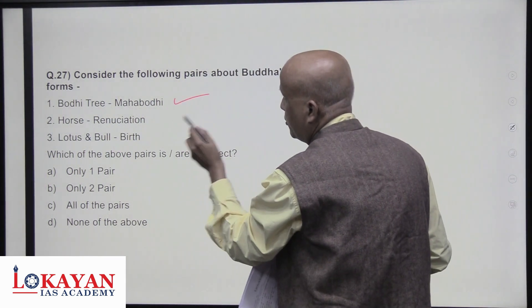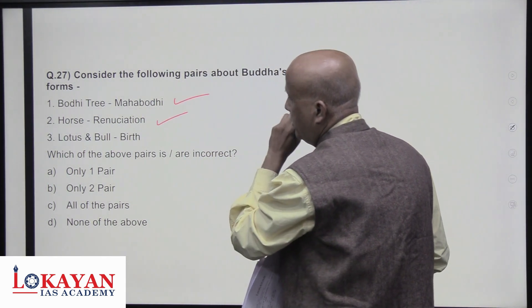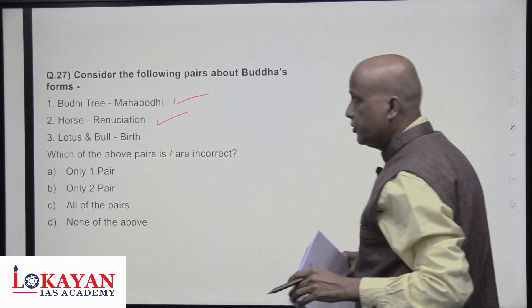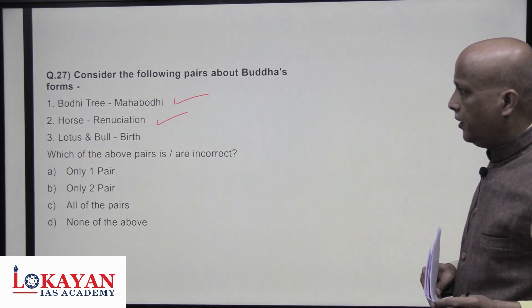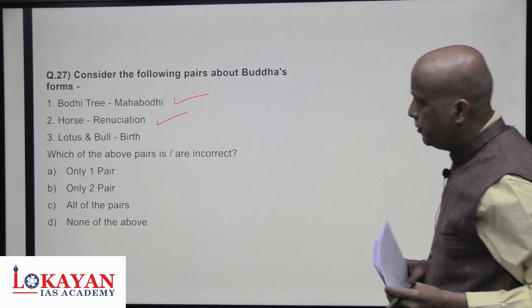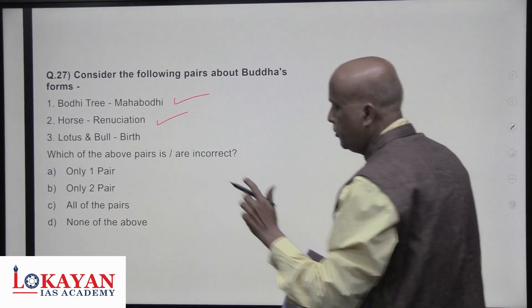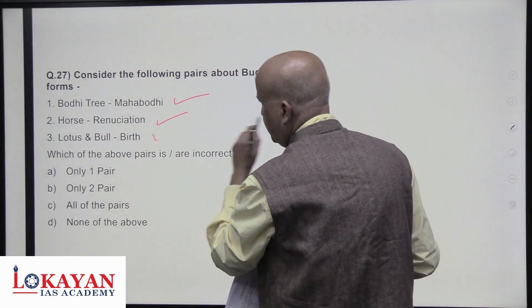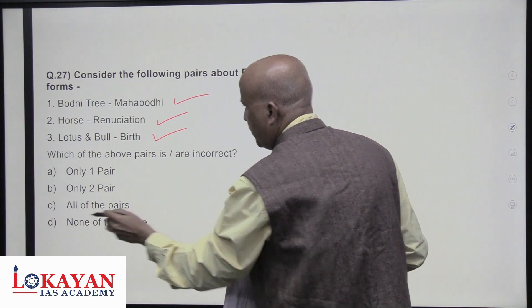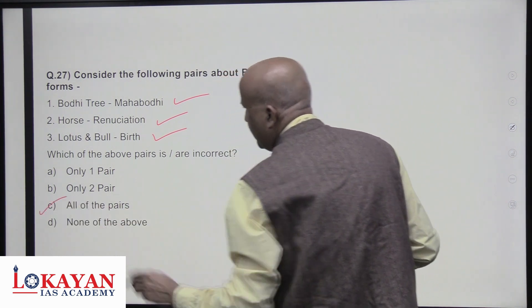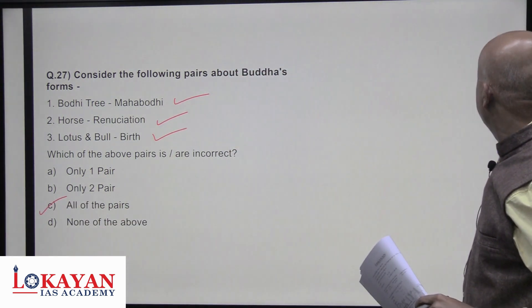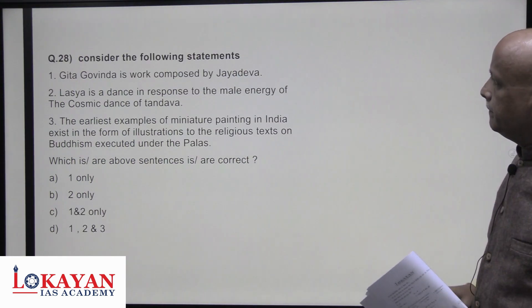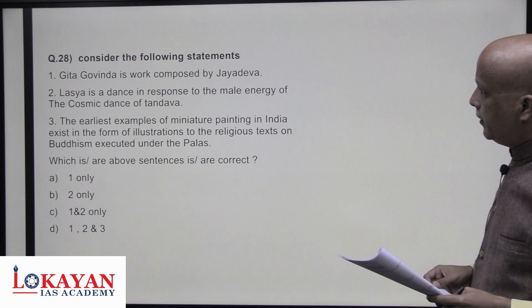Which of the pairs about Buddhist symbols are matching? Bodhi Tree — Mahabodhi: correct. Horse Kanthaka — the great renunciation: correct. Lotus and Bull — symbol of birth: correct. All pairs are matching and correct.